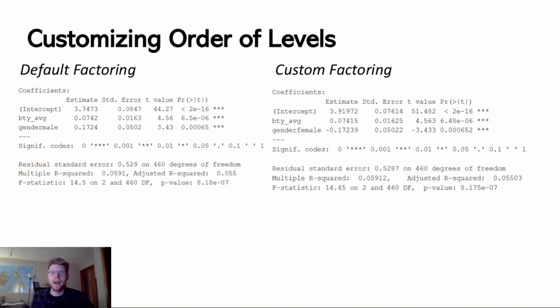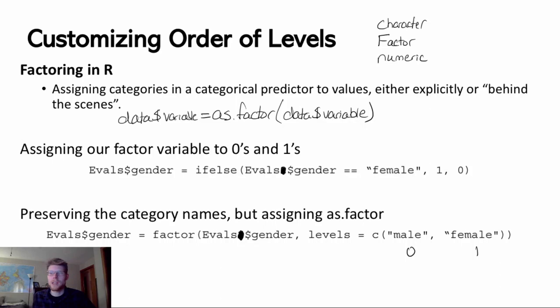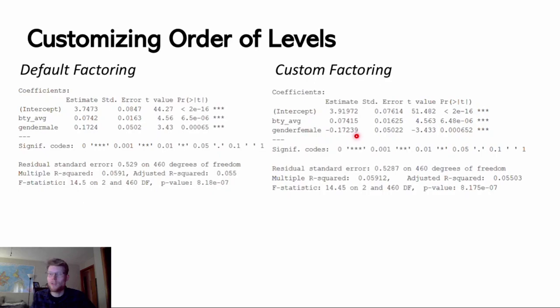As an example, on the left is what happens if I don't do any custom ordering and just throw gender in as a predictor — it assigns male to 1 and female to 0. On the right is what happens if I run the custom factor function: female now shows up as assigned to 1, and I get a coefficient for when female is true for a particular observation.